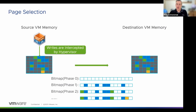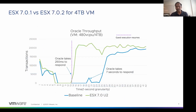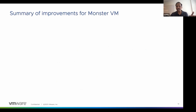We also added more optimizations — to validate these pages, we split the work among all the vCPUs to keep the pre-validation time very short. The performance results look great. Here we're comparing vSphere 7.0 Update 1 versus 7.0 Update 2, where this change was introduced. The blue line is the baseline where Oracle took seven seconds to respond. With these changes, Oracle took just about 250 milliseconds to respond — that's almost 28 times improvement.